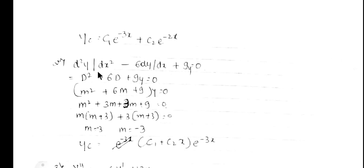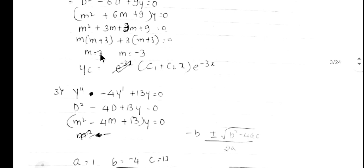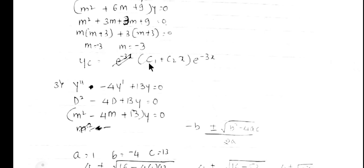Example 2: d²y/dx² - 6·(dy/dx) + 9y = 0, written as (D² - 6D + 9)·y = 0. The auxiliary equation is m² - 6m + 9 = 0. Factorizing: m² - 3m - 3m + 9 = 0, giving m(m-3) - 3(m-3) = 0, so m = 3 and m = 3. The roots are real and equal. Therefore the complementary solution is yc = (c1 + c2·x)·e^(3x).